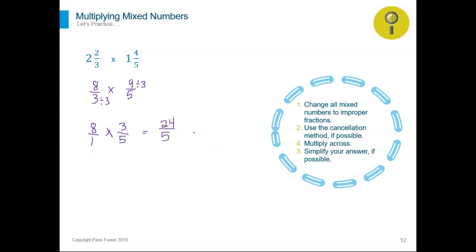Nothing else is common, so we are ready to multiply across. Eight times three is 24 over five. This is your answer. Or, if you want to change it to a mixed number: how many times does five go into 24? Four times. Keep the five. Multiply four times five is 20. Subtract 24 minus 20 — that gives a remainder of four. So the answer is four and four fifths.